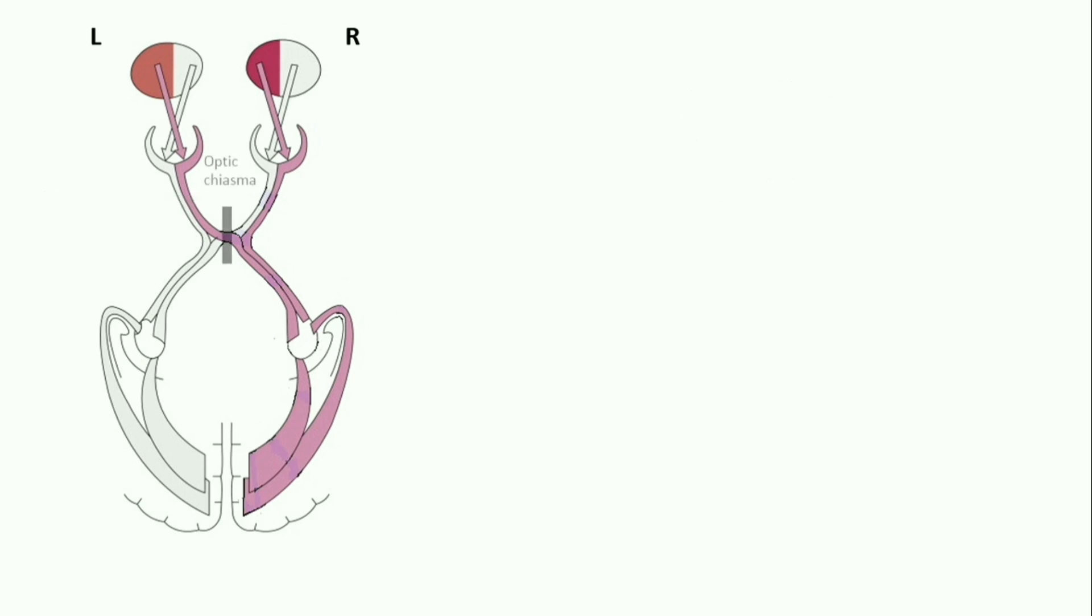Lesion to optic chiasm causes bitemporal hemianopia. Heteronymous means different side of visual field. Hemianopia means partial blindness.